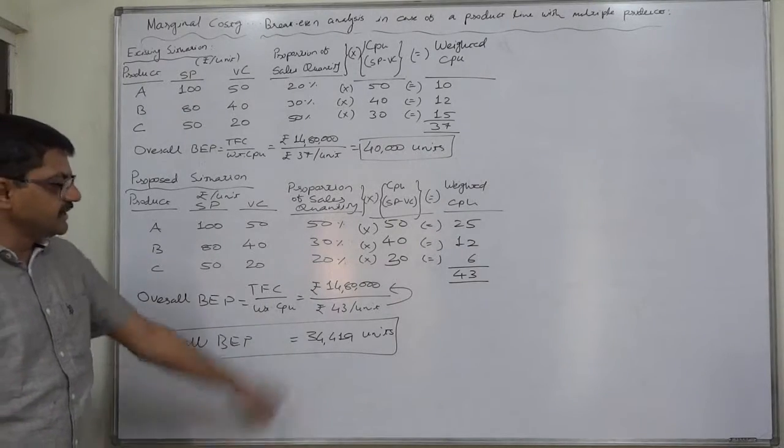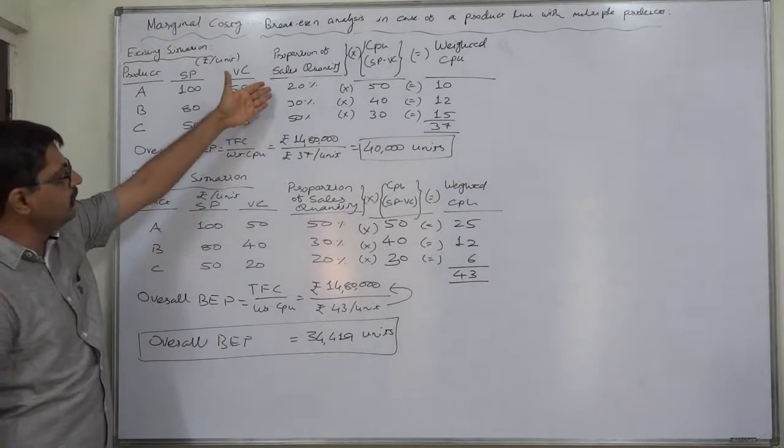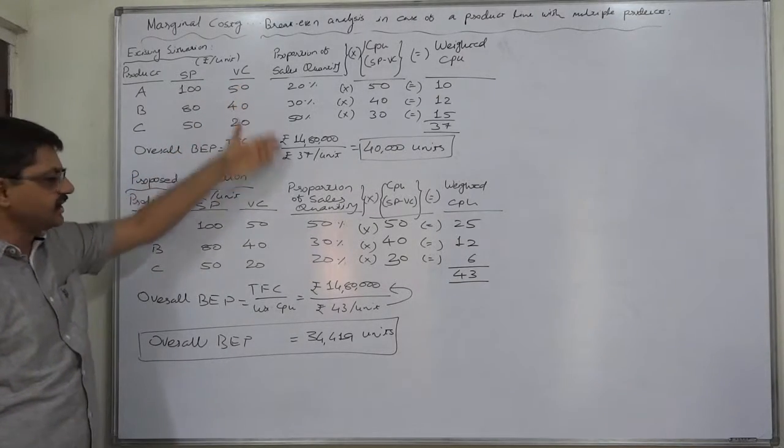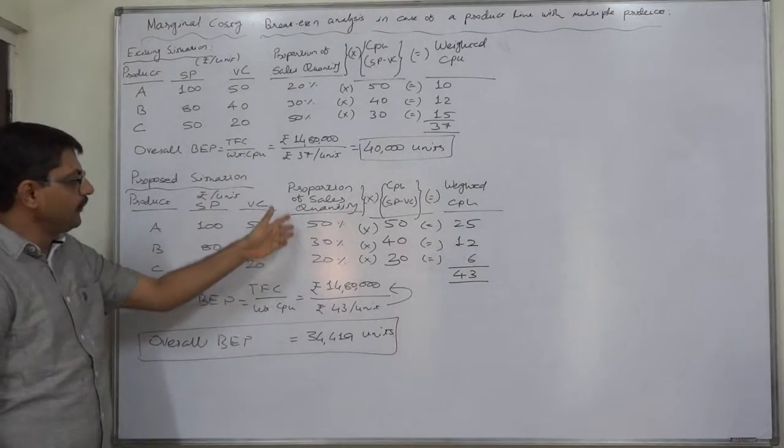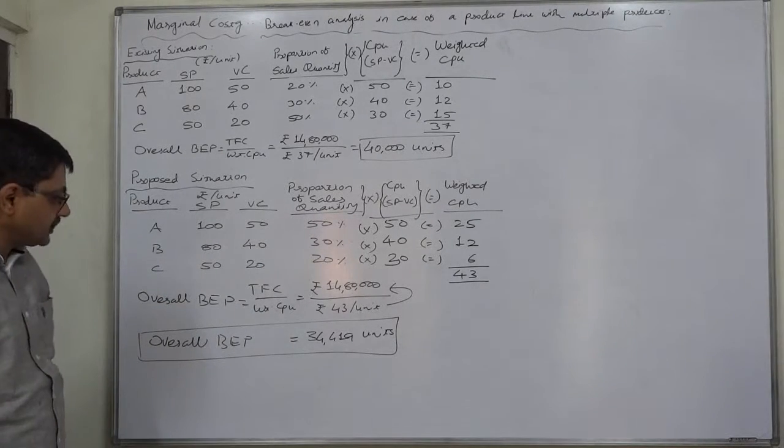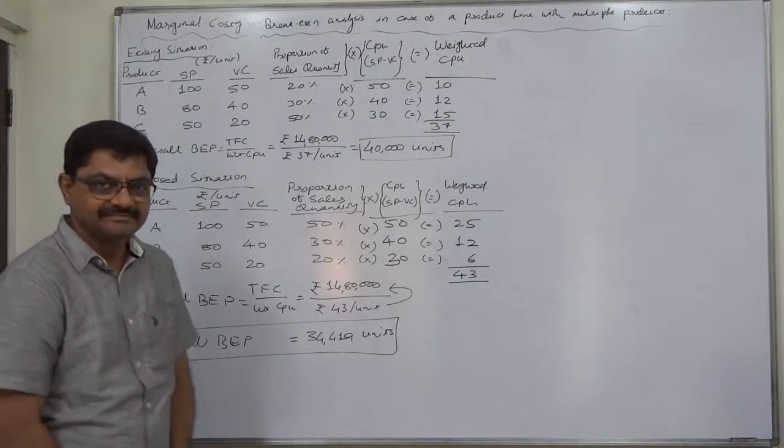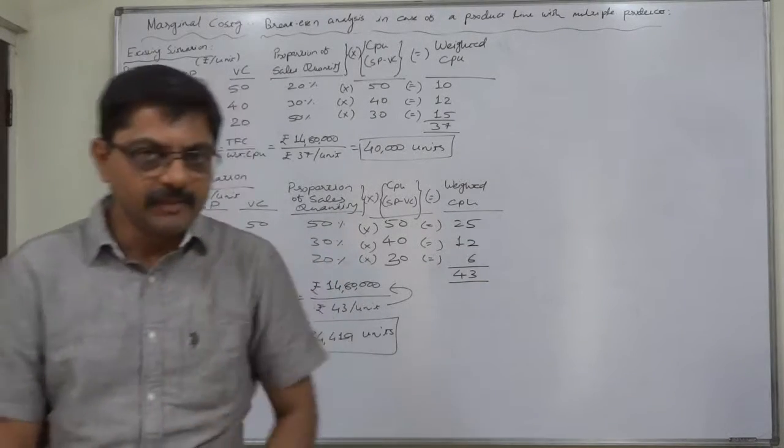So we can say that it is advisable to change the sales mix proportion from 20, 30, and 50% respectively to 50%, 30%, and 20% respectively, because it decreases the overall breakeven point of the firm. That's it. Thank you very much.